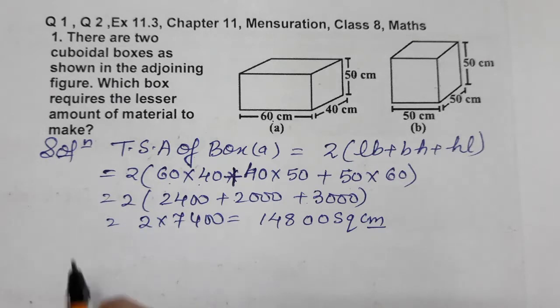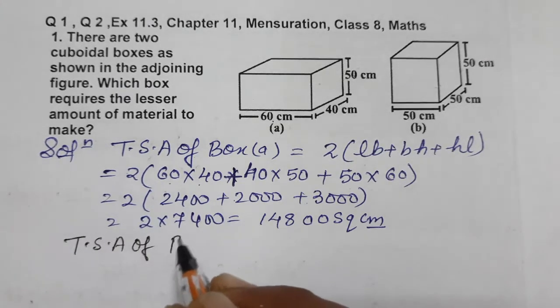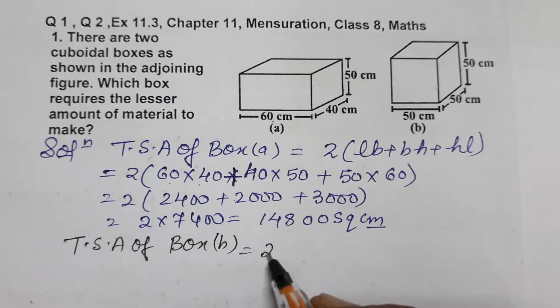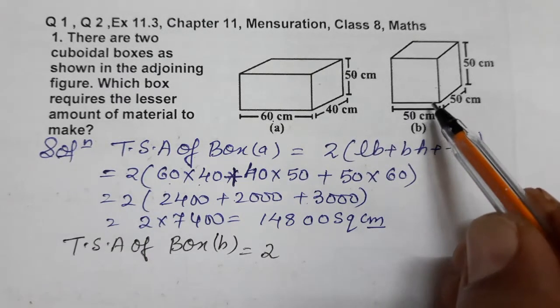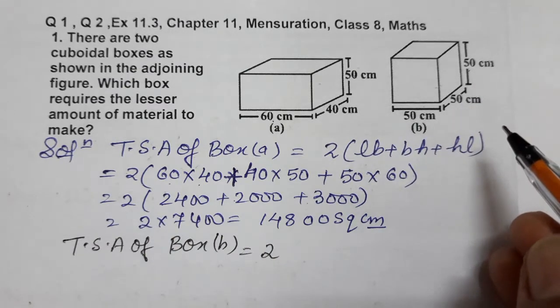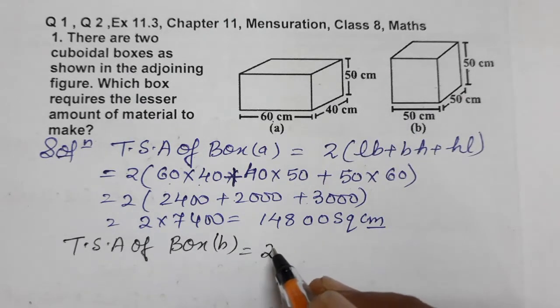Now let's find total surface area of Box B. Box B is a cube where all sides are equal—length, breadth, and height are all equal. What is the total surface area of a cube? It equals 6A squared.